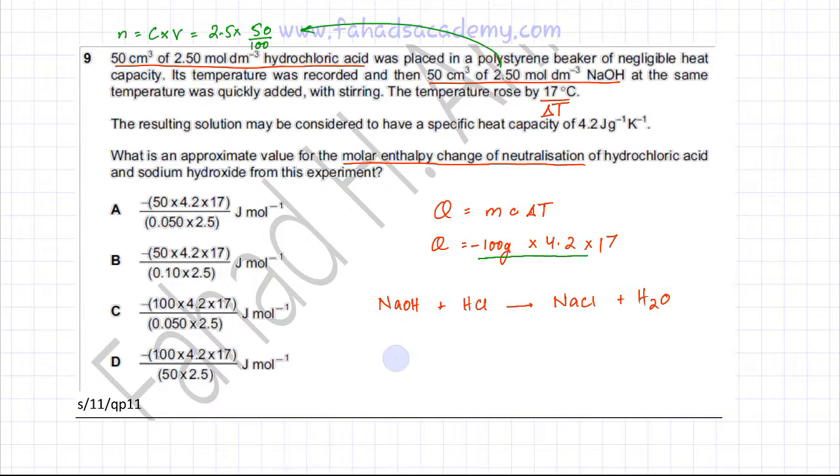So this energy change which we calculated, it's not for 1 mole it's actually for 2.5 times 50 divided by 1000 to convert 50 cm³ into dm³ that's basically equal to 0.05 dm³ so this is the amount of moles. So the energy change is for these many moles, the energy change is minus 100 times 4.2 times 17, so this is the energy that's released mc delta t and these are your moles.